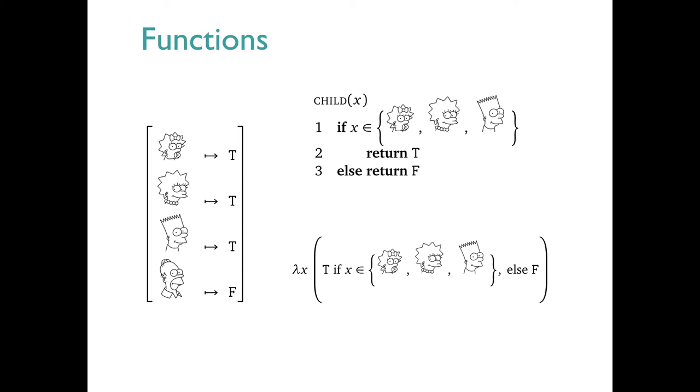This third view of the child function is the one we'll work with the most. It uses some of the notation from lambda calculus to identify the function. The lambda x part says that this function is looking for a single entity argument. Once it has that argument, it behaves just like the others, returning t, or true, if the argument is in the set of children, otherwise f, that is false.